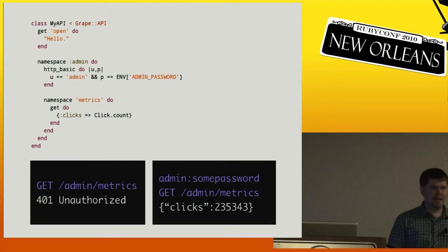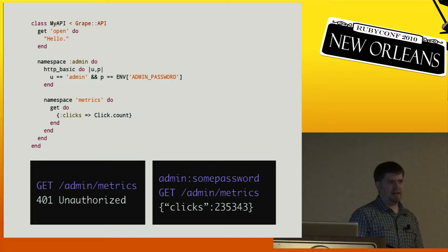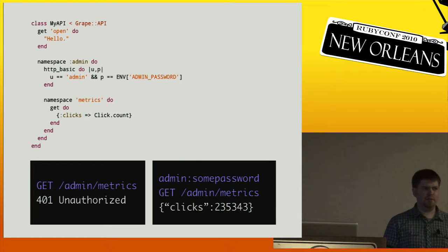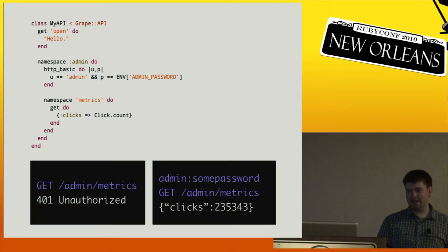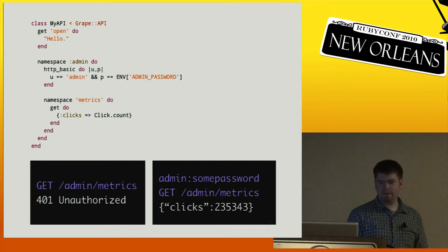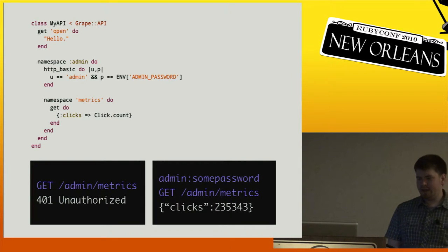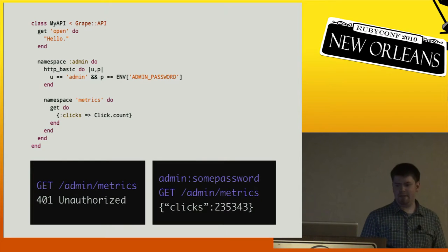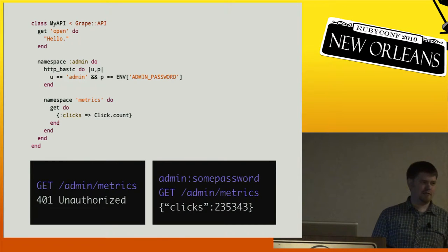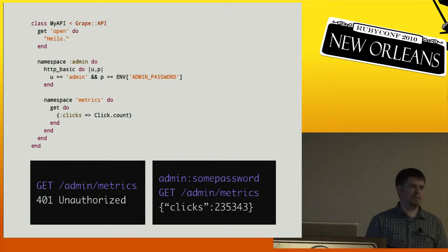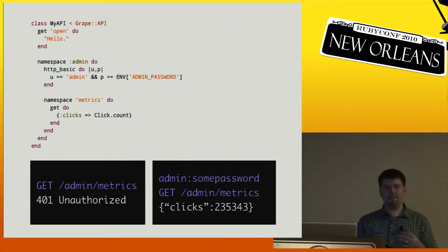Grape also supports basic auth. All you have to do is add an HTTP basic call with a block that takes a username and password, then you can do whatever kind of check you want. In this case, if I have an admin portion of my API protected by a simple password set in environment variables — if you try to GET slash admin slash metrics without supplying the admin username and password, you get a 401 Unauthorized. Supply the correct password and it passes through, serializes the JSON, and works as expected.